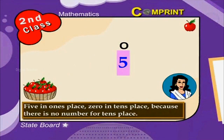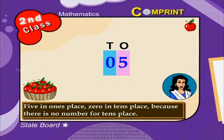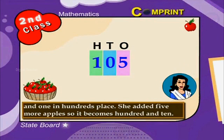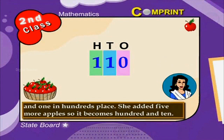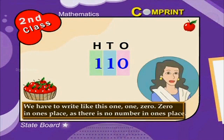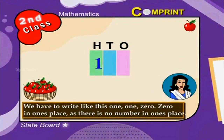For 105: five is in the ones place, zero is in the tens place as there is no number for tens, and one is in the hundreds place. She then added five more apples, so it becomes 110. We write it as 1, 1, 0.